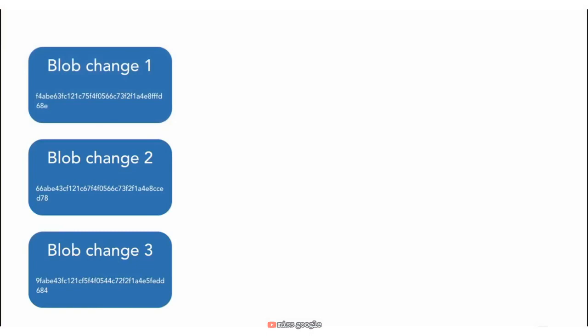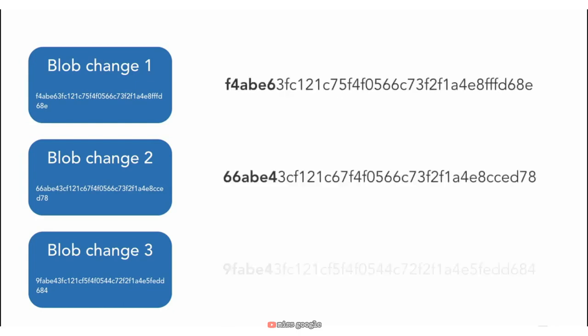To begin, when you first open up a file and start making changes, Git is tracking each one of these individual changes in that file. Git refers to these individual changes as blobs. Each blob is assigned its own unique SHA-1 hash ID — a 40-character-long ID that Git uses to identify the specific blob. And as you can see, each one of these blobs has a different ID.